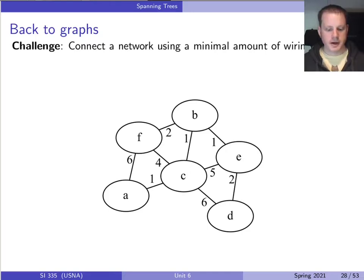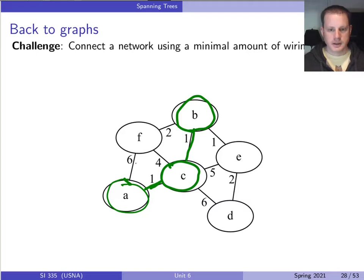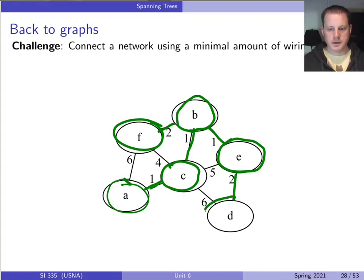As a reminder, Prim's algorithm starts from some vertex in the graph, like vertex A, and then always takes the least weight edge from the current tree so far. Here it'll take this weight 1 edge to join in with C, then it's looking at all the neighboring edges of any of these nodes. Weight 1 is the least, then another weight 1 edge. Now looking at everything connecting these, we have two weight 2 edges, so we go here and then finally to get D. So we get this minimum spanning tree.